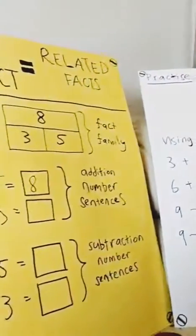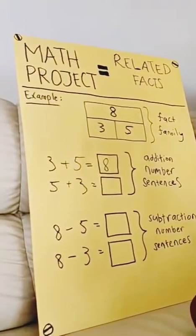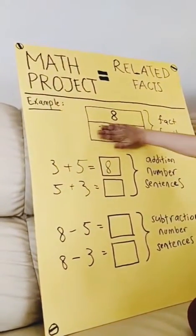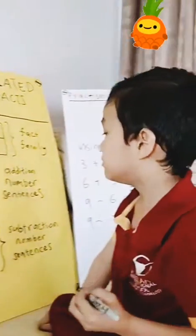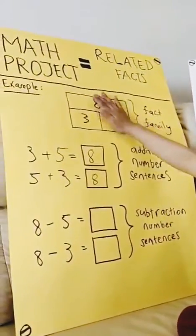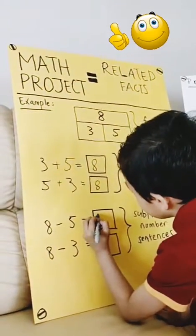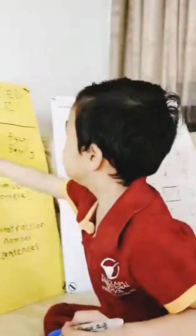5 plus 3, that's also 8. 8 minus 5? That's 3. And the other one, 8 minus 3? That's 5.